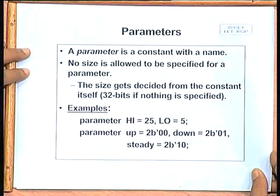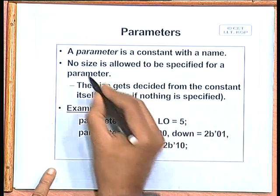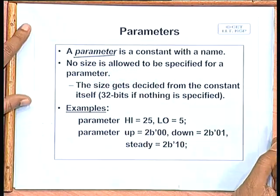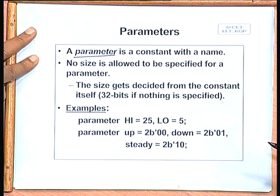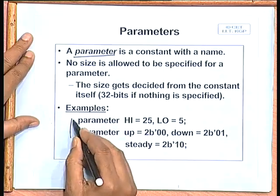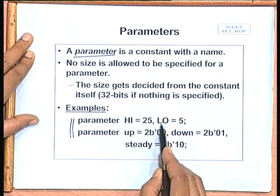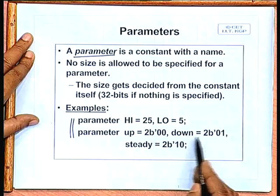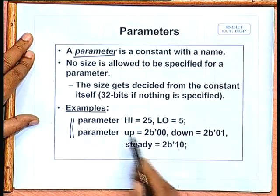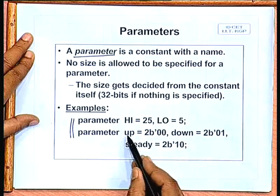Continuing from that point, today we shall first see how we can define a named constant — a constant with a name. In Verilog it is called a parameter. A parameter is a constant which can be defined against a name and that name can be used in an expression. For example, you can define: parameter high equal to 25, low equal to 5, or parameter up equal to 00, down equal to 01, steady equal to 10. Instead of writing 00, 01, or 10 you can refer to them by up, down, or steady.